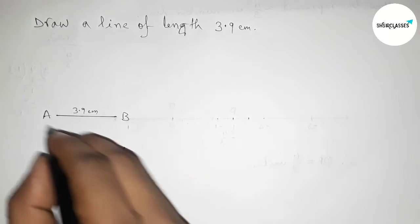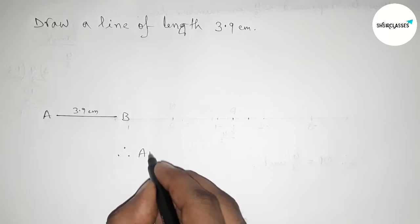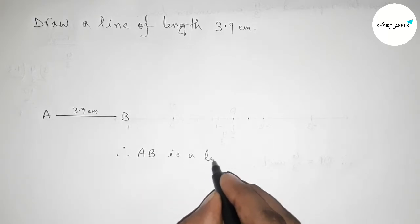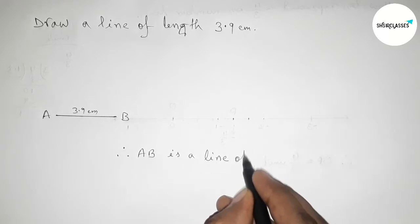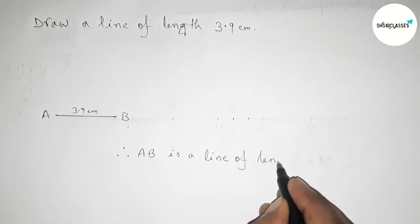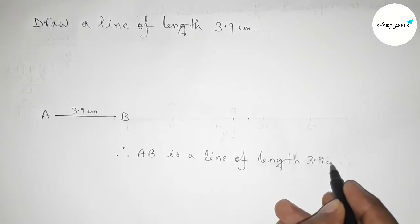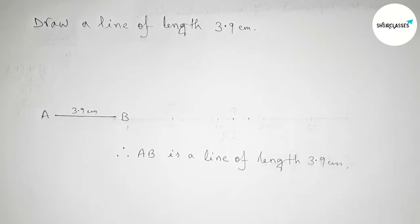Therefore, AB is a line of length 3.9 centimeter. By this way you can draw a line of length 3.9 centimeter by using a scale. That's all, thanks for watching. If this video is helpful to you, then please share it with your friend. Thanks for watching.